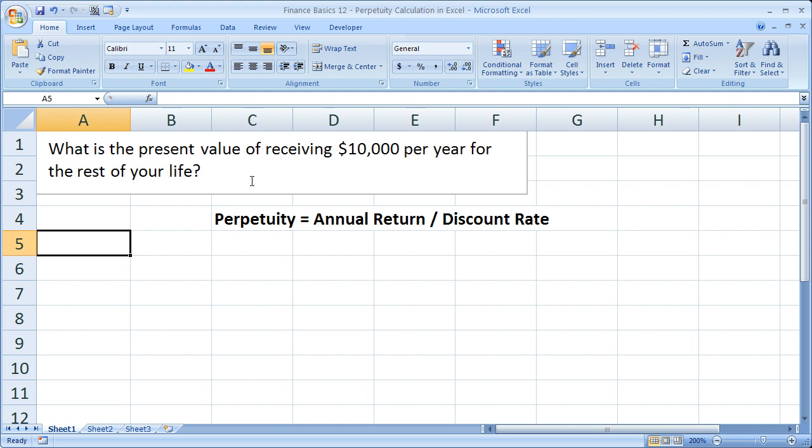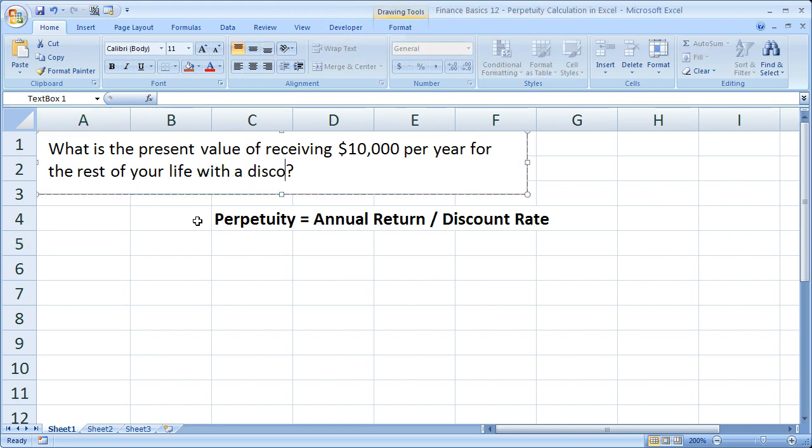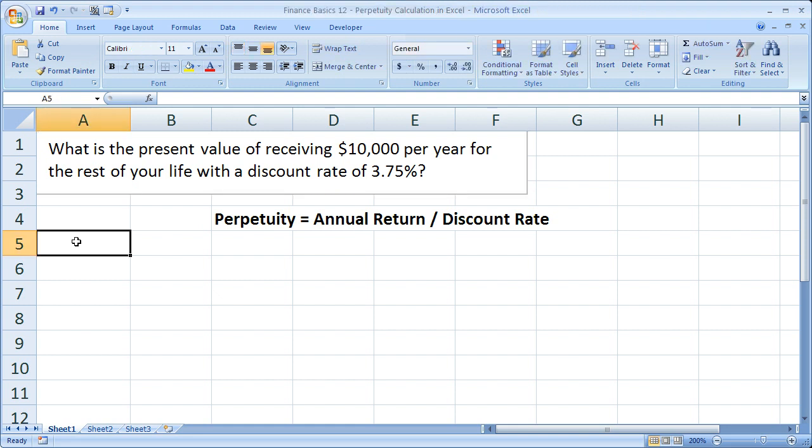And your goal is to see how much is that actually worth today. And let's actually add with a discount rate of 3.75%. So you could say that other similar investments are earning 3.75% or that's what you think that you'll be able to earn on that money.